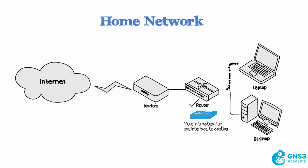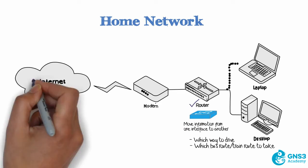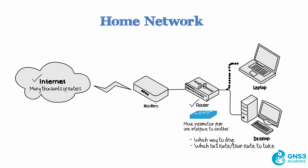In the same way as you may make decisions every day about which way to drive or which bus route or train route to take, routers make decisions based on some kind of criteria to determine the best path to a destination. The internet consists of many thousands of routers that are making decisions all the time about the best path or route to a destination.